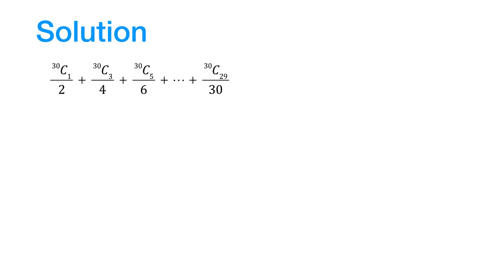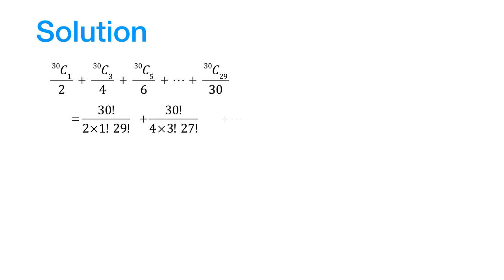Now, over here, the numerators are made up of binomial coefficients. We know the formula for nCr. So, using that formula, we can write down the terms of this series in this form. This is the first term, this is the second term, and so on till the last term.